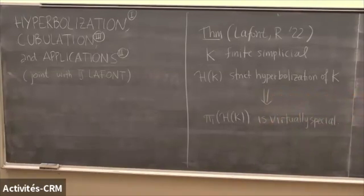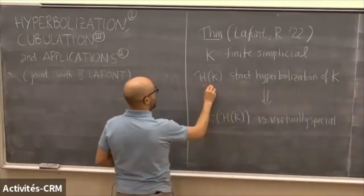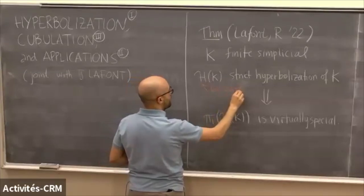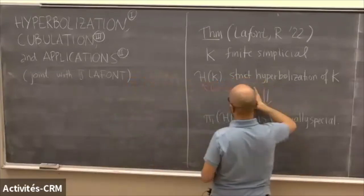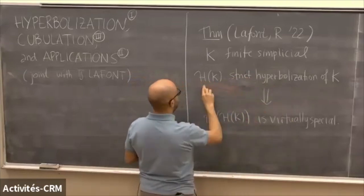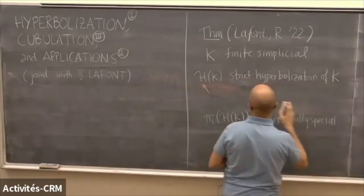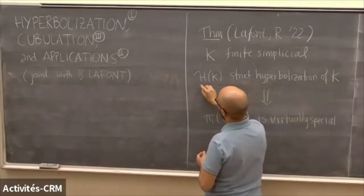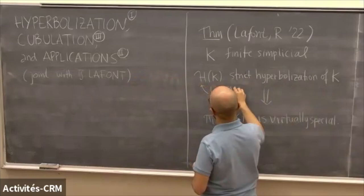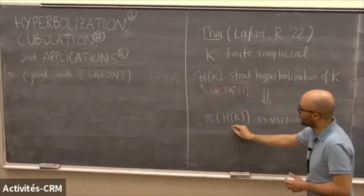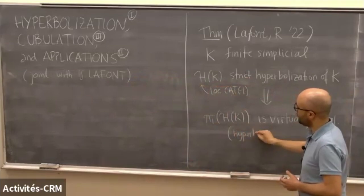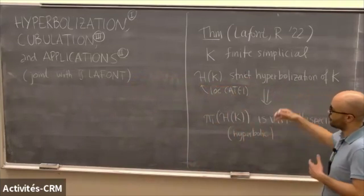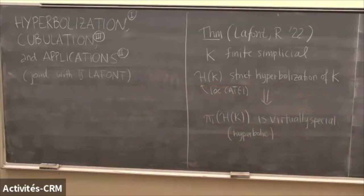For the statement, the only thing you need to know for the moment about strict hyperbolicization of K is that this is a locally CAT(-1) space. So this group is of course hyperbolic — this is not something we prove, it's something the construction does for you. The construction gives you something with a hyperbolic, even CAT(-1), fundamental group. What we prove is virtual specialness for these hyperbolic groups.